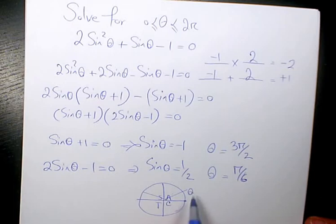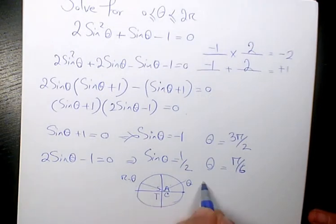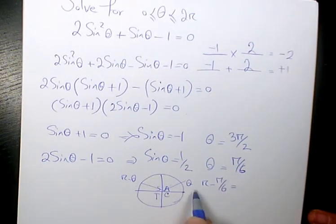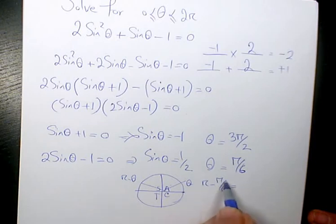So here we have theta. Here we have pi minus theta. Theta we found it, which is pi over 6. And pi minus theta, which is pi minus pi over 6, will be 6 pi over 6 minus pi over 6, will be 5 pi over 6.